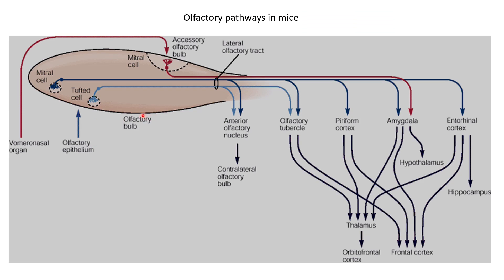After the olfactory bulb, the mitral and tufted cells take this information to several higher brain areas. The primary target is the piriform cortex, also called the olfactory cortex, which is present in the ventral part of the cortex at the intersection of the temporal and frontal lobes. There are also other targets such as the olfactory tubercle, the amygdala — which is involved in processing of emotions, particularly fear, possibly explaining how smells affect our emotions — and the entorhinal cortex, from which information goes to the hippocampus, hypothalamus, thalamus, and frontal cortex.